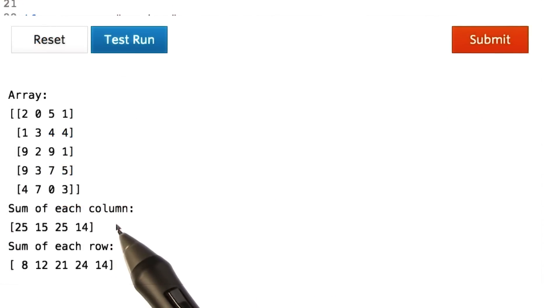To get the sum of each column, we pass the value to the axis attribute as zero. And to get the sum of the rows, we pass the value as one.